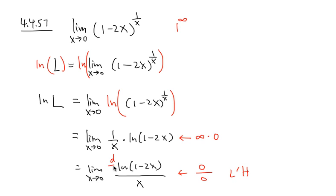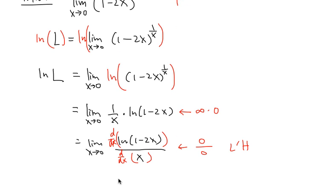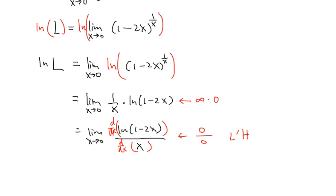Take the derivative on the top and the derivative on the bottom. This is going to be the limit when x is approaching 0. On the numerator, ln of something, the derivative of that is 1 over 1 minus 2x times the derivative inside, which is negative 2. On the bottom, the derivative of x is just 1.